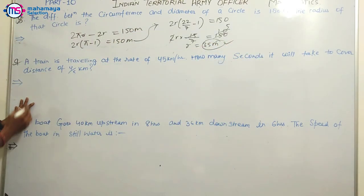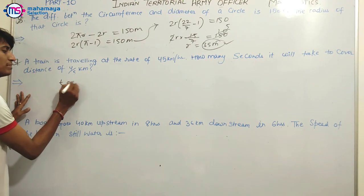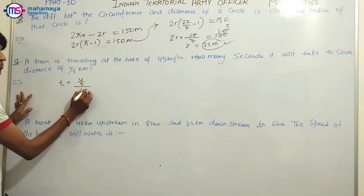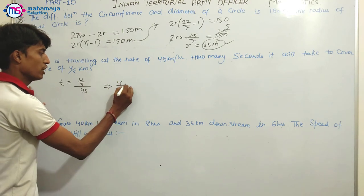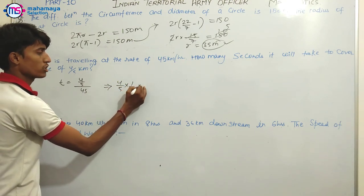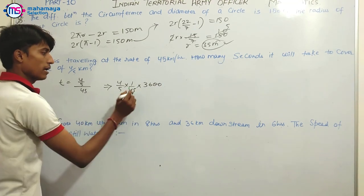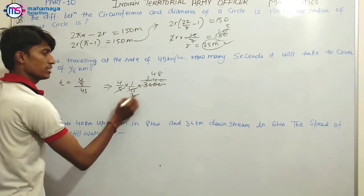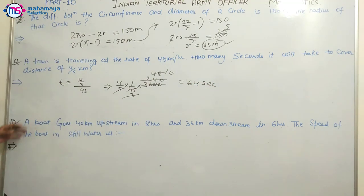A train is travelling at the rate of 45 km per hour. How many seconds will it take to cover a distance of 4 by 5 km? Time equals distance divided by speed, so 4 by 5 into 1 by 45 hours, then converted to seconds gives 64 seconds.